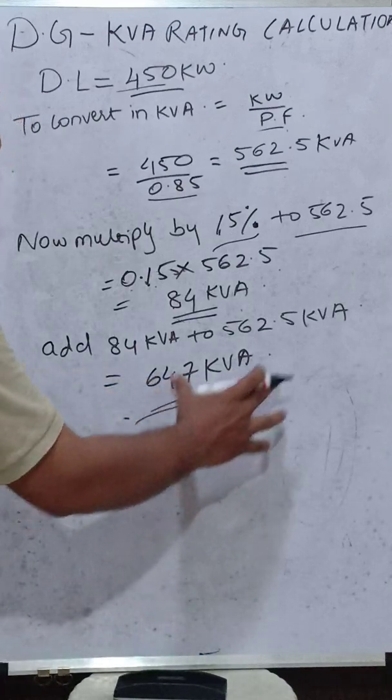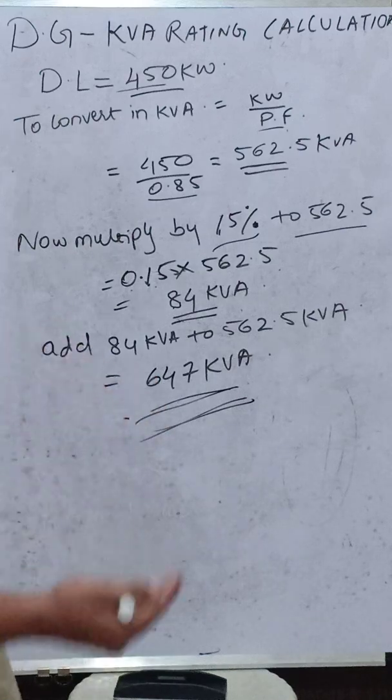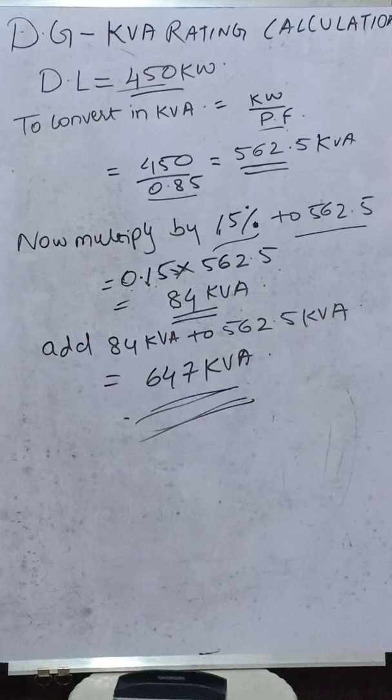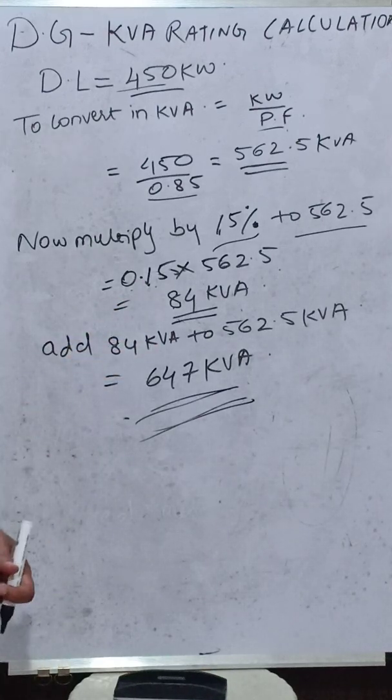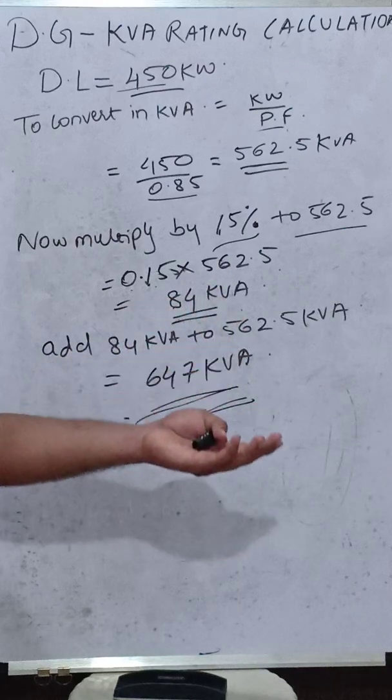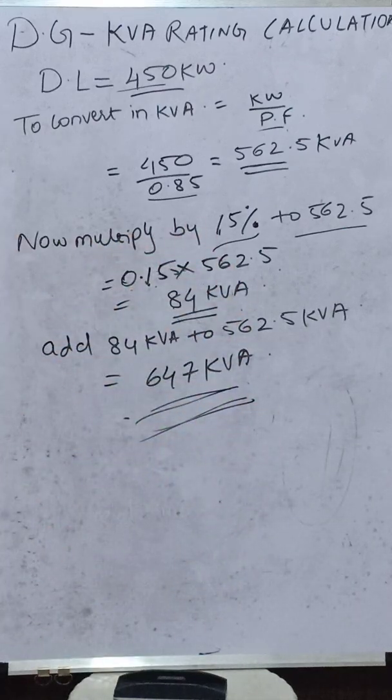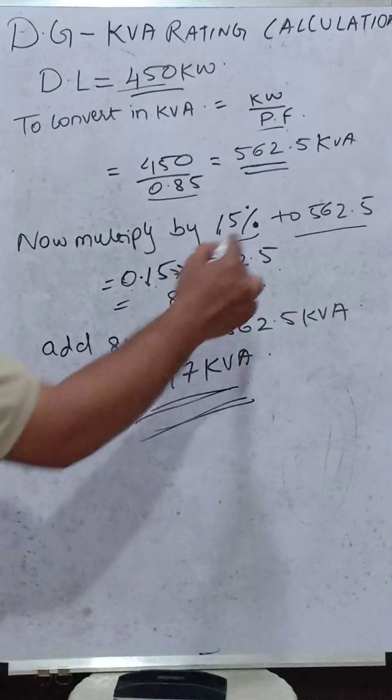Now, we know that 647 kVA is not the standard DG set available. So, we will have to consider a DG set which is nearby to it, say 700 or 730. That will decide what brand you are going for, whether Kirloskar or Goel, the different manufacturers of the DG set. But the funda here remains the same.